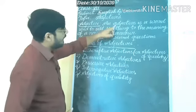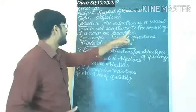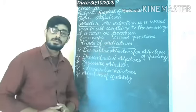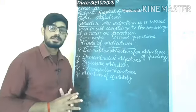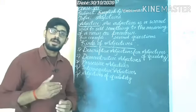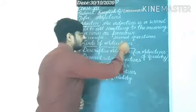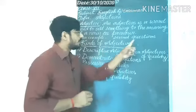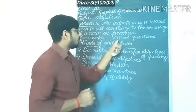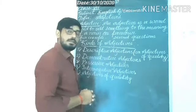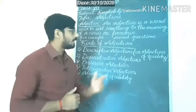Adjective. An adjective is a word used to add something to the meaning of a noun or pronoun — it enhances the meaning of a noun or pronoun. Here one example is given: 'Several questions.' The word 'questions' is a noun and 'several' is here used as an adjective of a number.